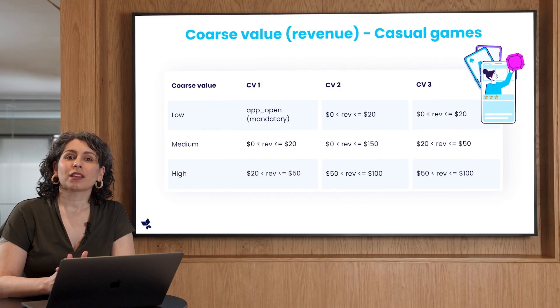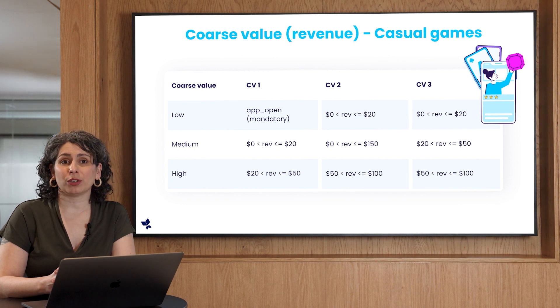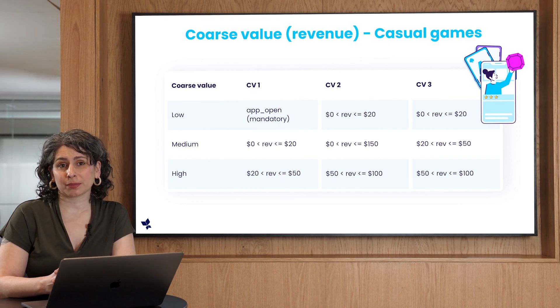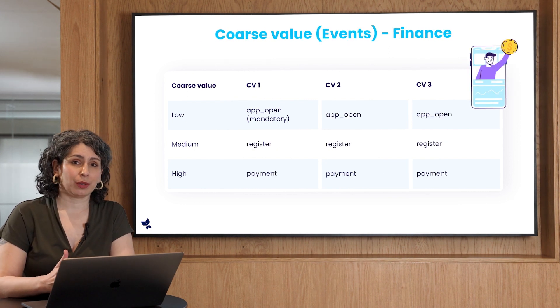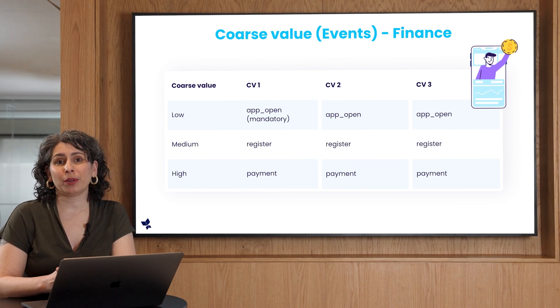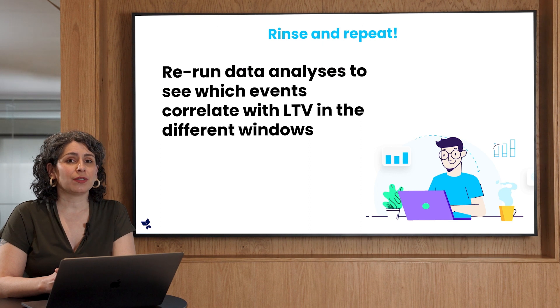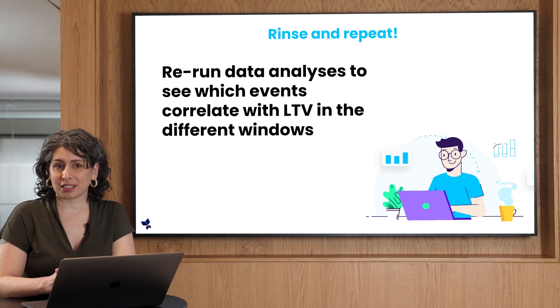Although our example shows the same configuration for all windows, you can use a different set of conversion value mappings for each. This is a similar example of how advertisers can configure their schema based on revenue for casual games. In this example, we're looking at in-app events to grade engagement from opening the app to payment. To see which events correlate with LTV in each window, you'll want to rerun data analyses.